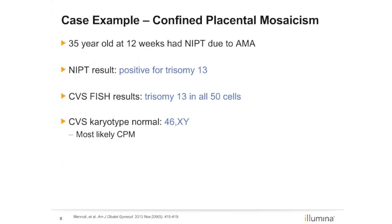To illustrate how confined placental mosaicism can affect NIPT results, let's look at this case. A 35-year-old woman had NIPT with a pretest indication of advanced maternal age. Both NIPT and FISH via CVS were consistent with trisomy 13. However, the final karyotype showed 46XY. Diagnostic testing should be recommended following all positive NIPT results. Additionally, knowing that CPM can impact both NIPT and CVS analyses, awaiting final karyotype results for making irreversible decisions is imperative.